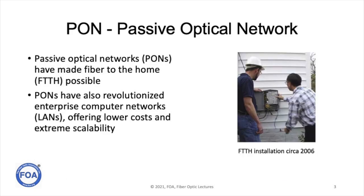Passive optical networks are a specialized type of fiber optic network used to make fiber to the home possible. It's also revolutionized enterprise computer networks, where in both cases it offers much lower costs and extreme scalability — meaning you can connect a lot of people for not a lot of money.